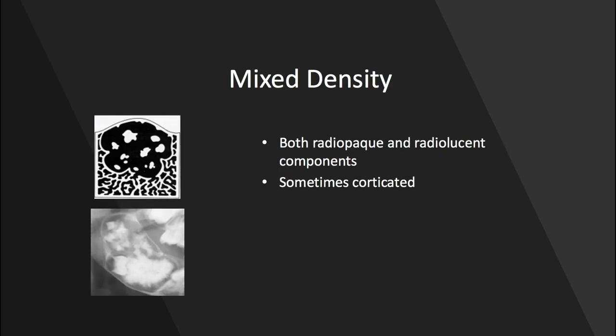The mixed density lesion has both radiopaque and radiolucent components. Sometimes it's corticated with a clear radiopaque border surrounding it, and sometimes it's not. It's going to be heterogeneous by nature because there are multiple densities at play. Sometimes you'll find a mixed density lesion around the crown of an unerupted tooth, sometimes in the maxillary sinus, and sometimes even in the zygoma or the maxilla.